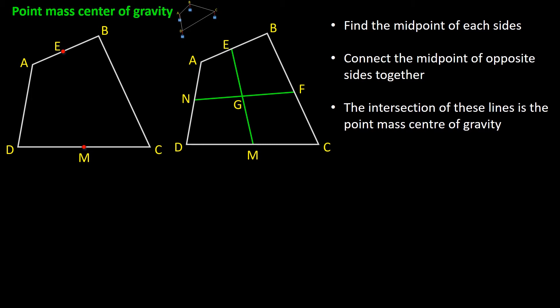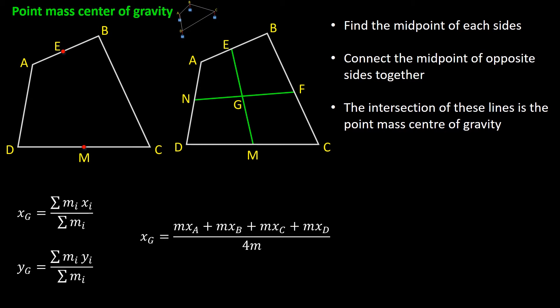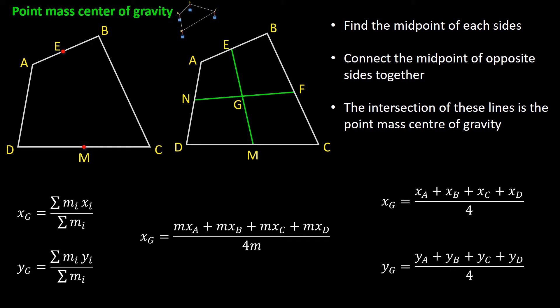Basically, this is the instruction for how to find it: we find the midpoint of each side, and we connect the midpoint of opposite sides, and the intersection of these lines gives us the point mass center of gravity. If we want to find the coordinate of the center of gravity, we use these formulas, in which MI is the mass connected at each vertex and XI is the coordinate of that vertex. Since we assume the masses are equal, the X coordinate of the center of gravity is XA plus XB plus XC plus XD divided by 4, and the Y coordinate is the sum of the Y coordinates of the vertices divided by 4.